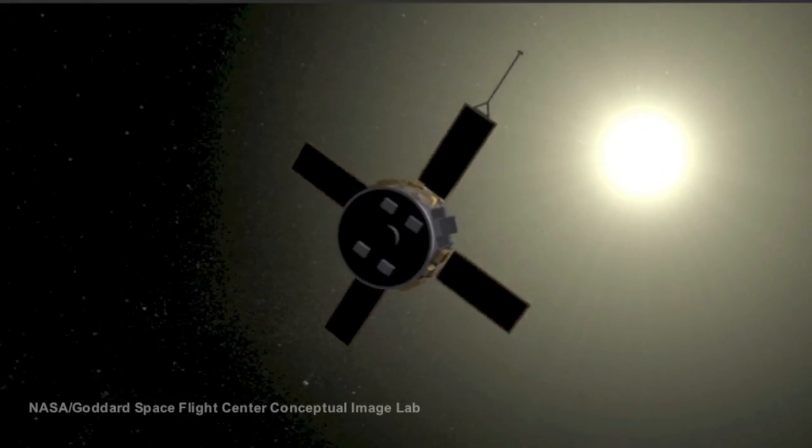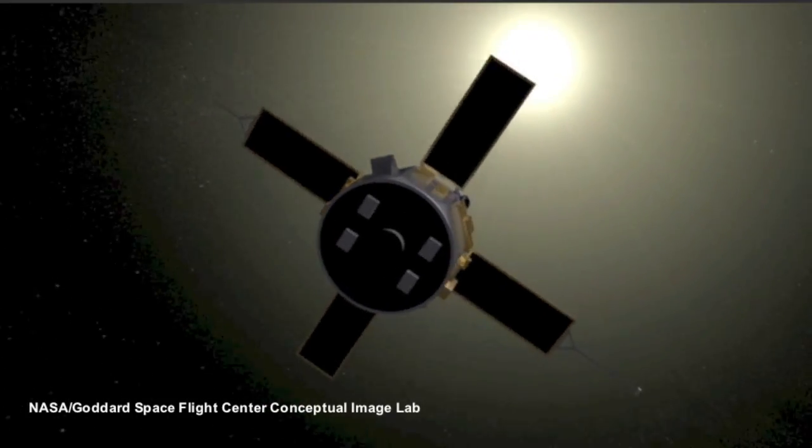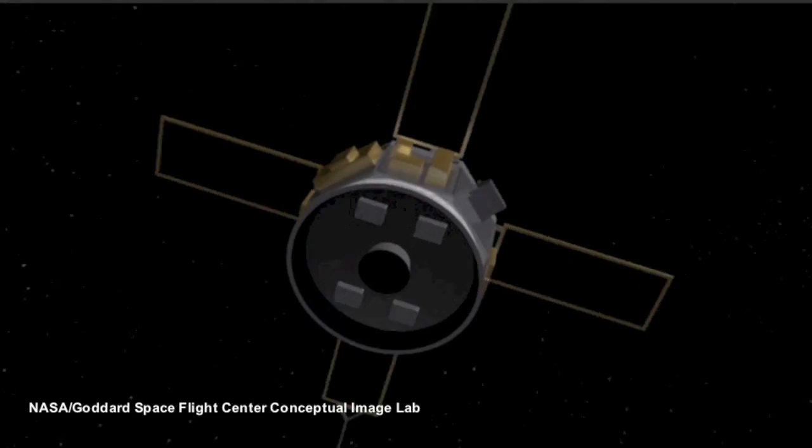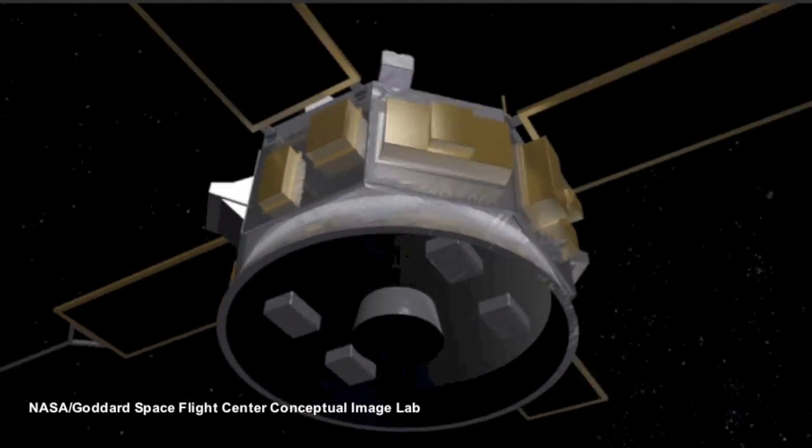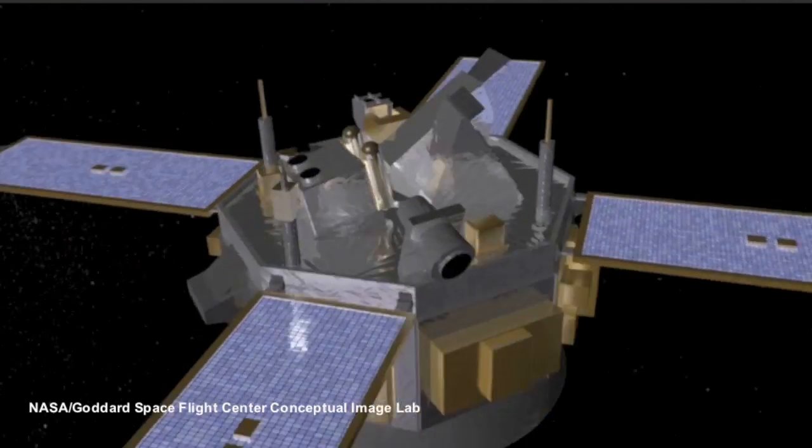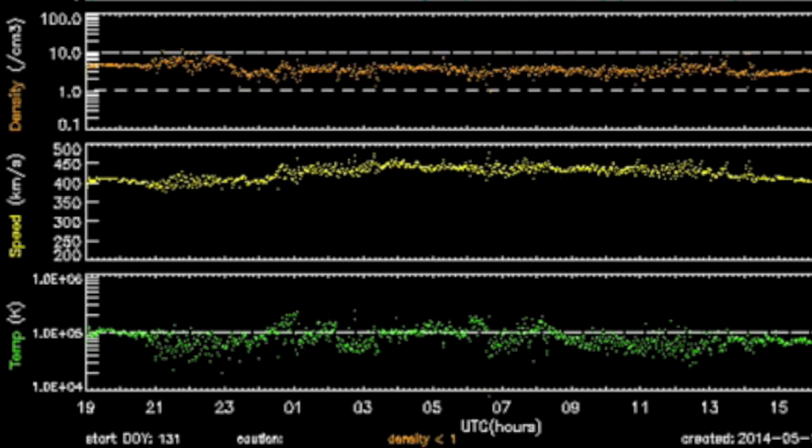The ACE satellite is currently charged with monitoring the solar wind, and it has been doing so for about 15 years. It measures numerous data points about the solar wind, including the density of the particles streaming from the Sun, the speed of those particles, and their temperature.